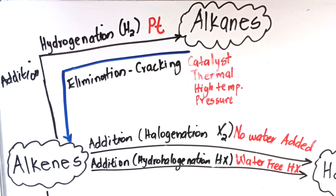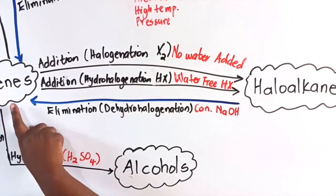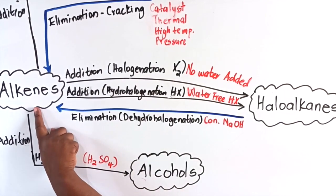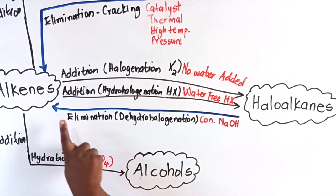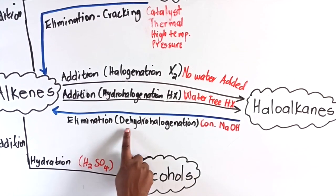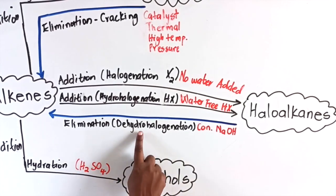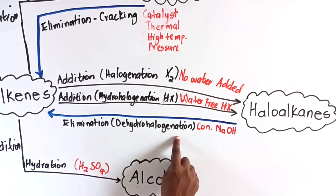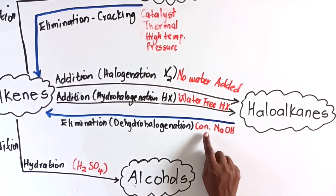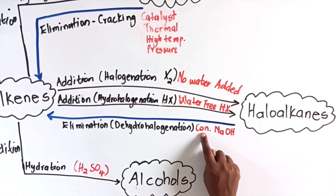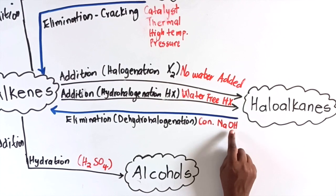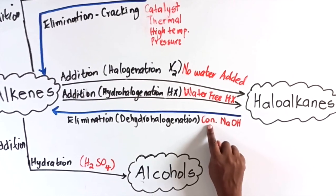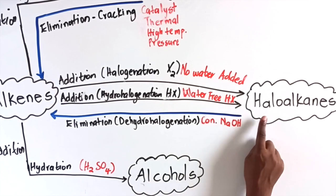When haloalkanes form alkenes, the process is elimination, and the specific name is dehydrohalogenation — reversing the addition of a halogen and a hydrogen. The reaction condition is a concentrated strong base, for example concentrated sodium hydroxide. When they give you the reaction condition, look at whether it is concentrated or dilute, because it will change the reaction.